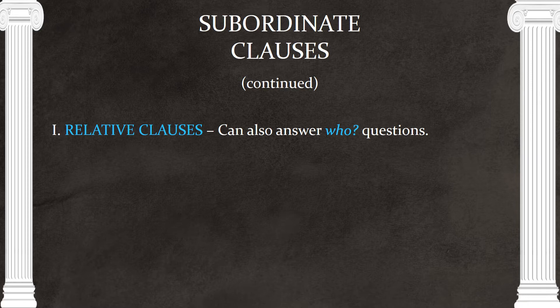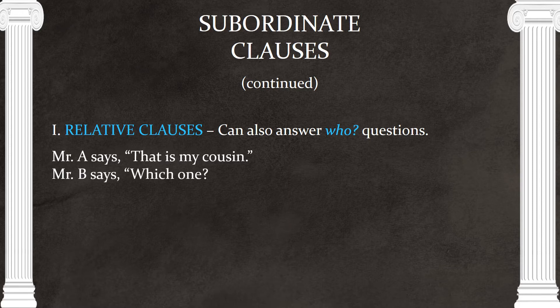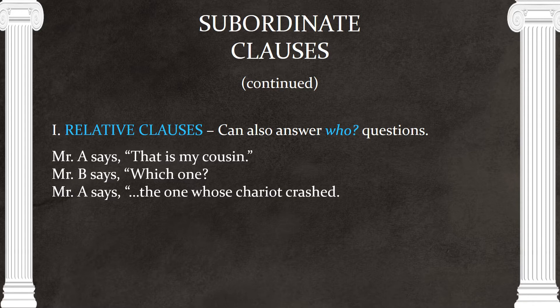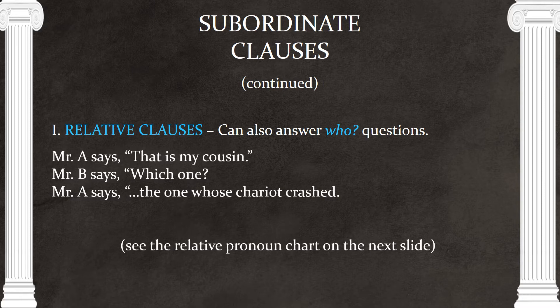Relative clauses can also answer 'who' questions. For example: 'That is my cousin' — which one? 'The one whose chariot crashed.' 'Whose chariot crashed' is extra information; it can't be a sentence by itself. The main part of the sentence is 'that is my cousin.' For 'whose,' 'to whom,' 'about whom,' 'with whom,' and similar forms, we look at the relative pronoun chart on the next page. 'Whose' can also be read as 'of whom' — 'the chariot of whom crashed.'